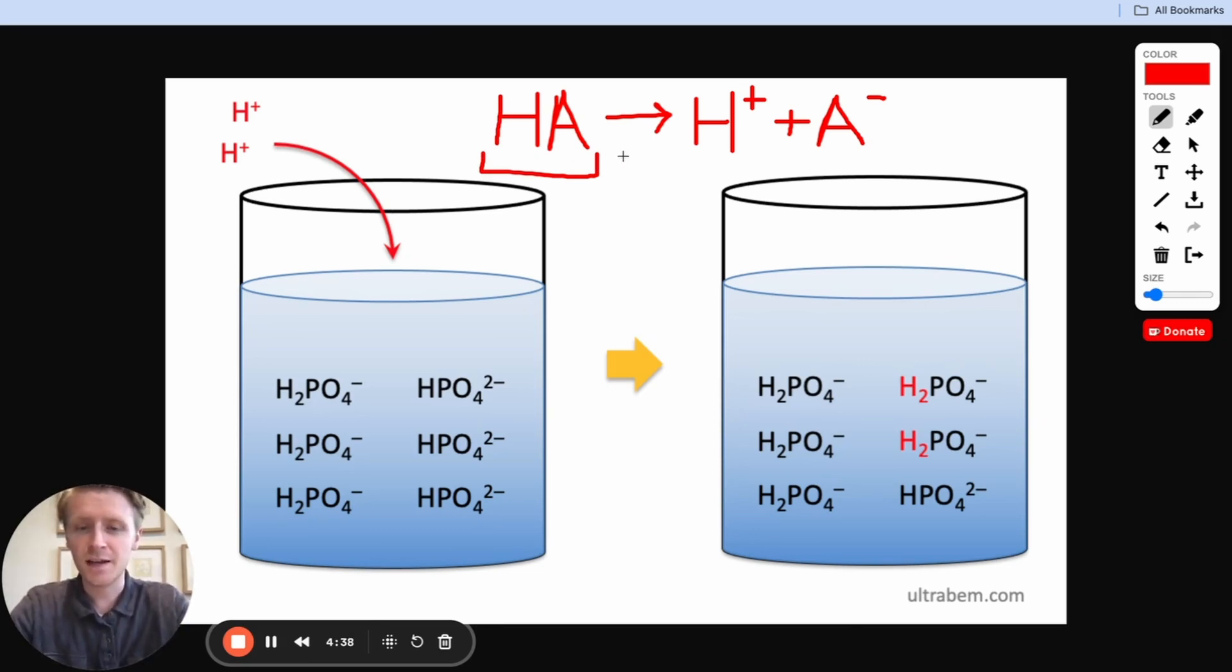Now as you can see here, an acid can give up its proton, maybe we mix it in water, it breaks apart, and then you have that proton broken off and you have A-, just the rest of the acid that's left behind, and this is referred to as the conjugate base.